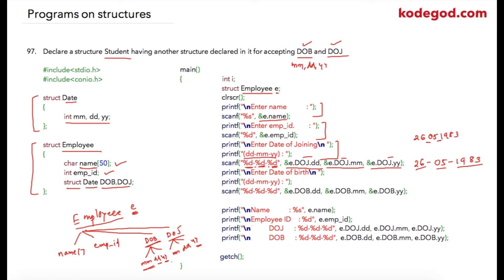Similarly, after that I am asking user to enter date of birth. The same format is here but instead of DOJ I am using DOB as storage.